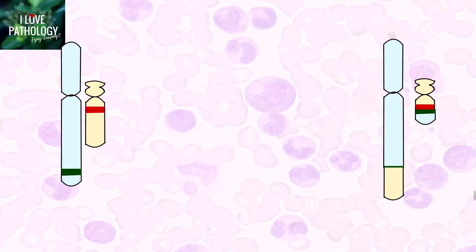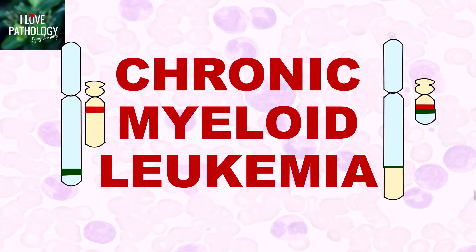Hi everyone, welcome back to this short tutorial from Pathology Made Simple at myelopathology.com. In continuation with the hematopathology series, today let us learn a very important topic in hematopathology — a very commonly asked question in undergraduate medical student examinations — that is chronic myeloid leukemia. This is in continuation with the myeloproliferative neoplasms which I have started in the previous session.